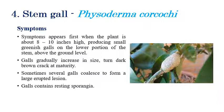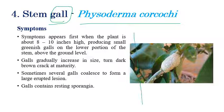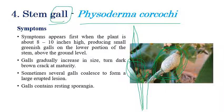Stem gall is caused by Physoderma corcori — the name itself indicates galls are formed in stem regions. The disease is observed at a height of 8 to 10 cm above the root level. Greenish galls or small tumors are initially small in size, but later they enlarge considerably as the disease matures. These galls contain a huge number of sporangiospores.